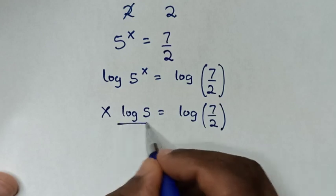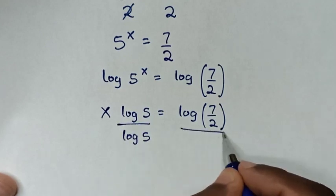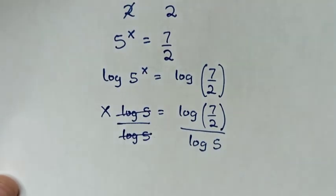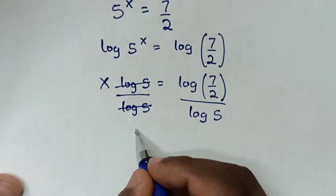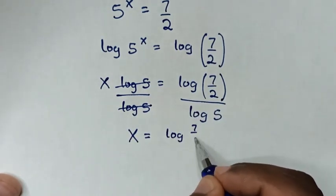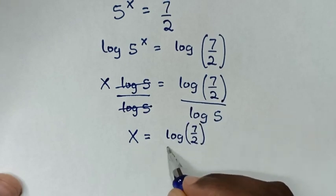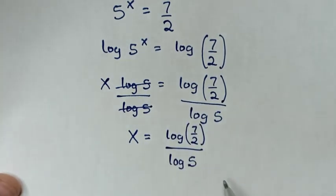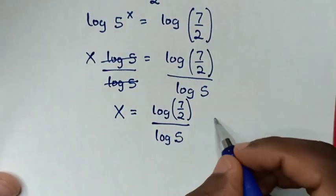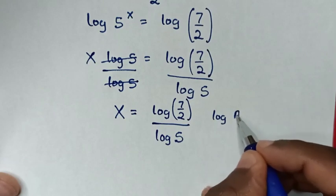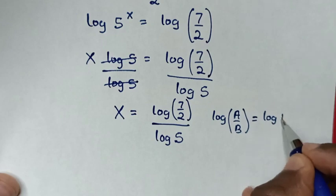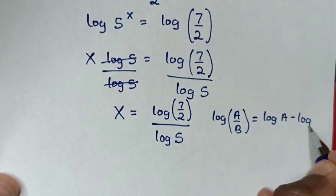Then in the next step, we'll divide by log of 5 on both sides. So this log of 5 will cancel, giving x is equal to log of 7 over 2, divided by log of 5. From this log of 7 over 2, we'll apply the logarithmic rule: log of a over b is equal to log of a minus log of b.